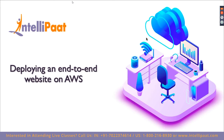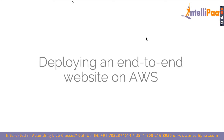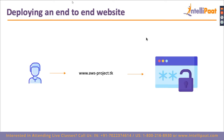Let me first tell you what we are basically going to deploy today. We are going to set up something like this — as a user, we will try to go to a URL like www.awsproject.dk and this domain should basically route us to our website.